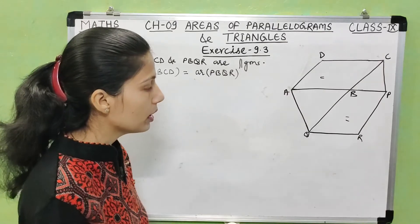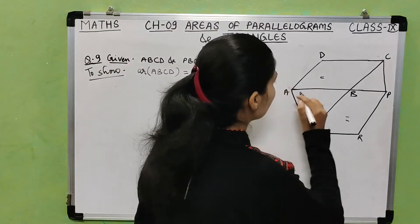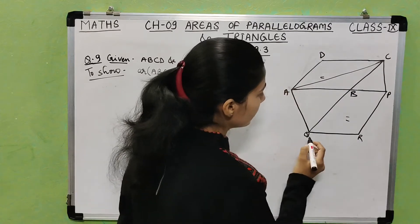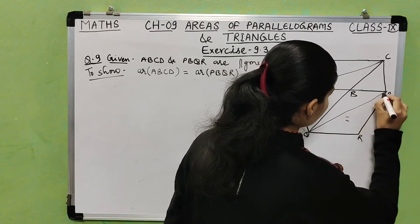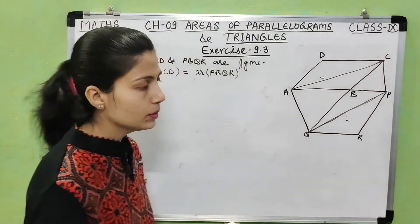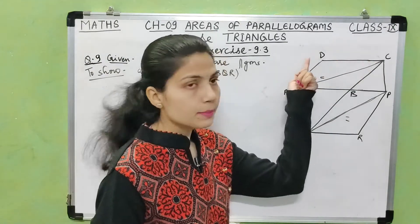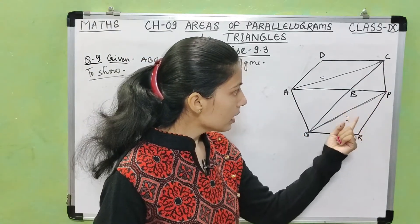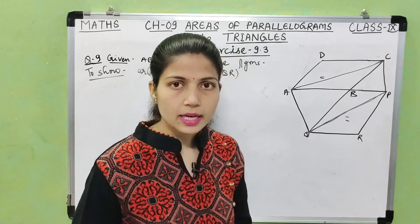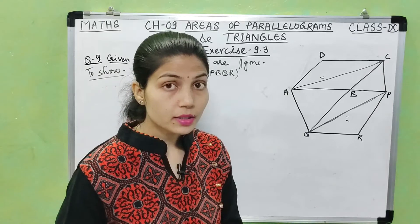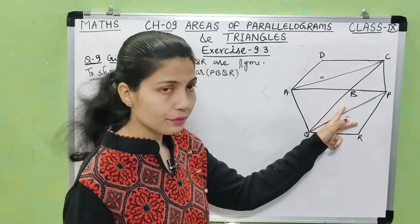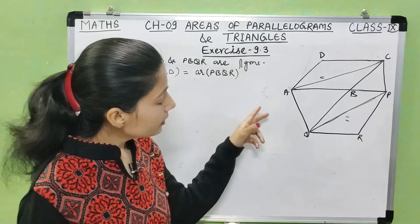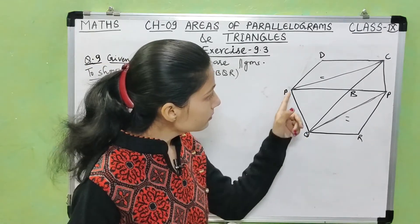For this construction, ABCD is a parallelogram and AB is extended to point P. AQ is drawn parallel to CP, and Q is on CB. Parallelogram PBQR is formed. We join diagonals AC and PQ. Diagonal AC divides parallelogram ABCD into two congruent triangles. Similarly diagonal PQ divides parallelogram PBQR into two congruent triangles.